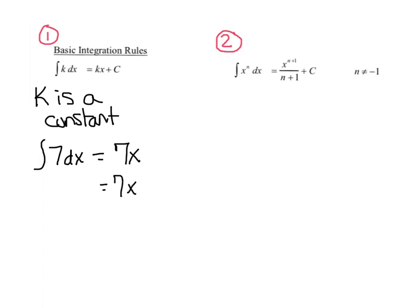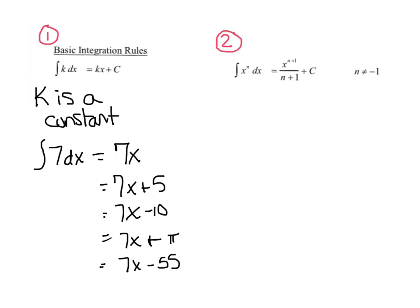How about 7x plus 5? Is its derivative 7? Or 7x minus 10? Or 7x plus pi — remember pi is a constant. Or 7x minus 55? All of these are answers to the integral of 7. So instead of listing out every possible one, which would be impossible, we slap on this plus c, meaning we get 7x plus any number in the world, and c could be any number.